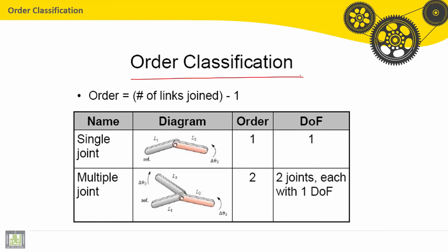Order classification. This is the number of links joined minus 1. For a single join, we have here the join between 2 links. The first one, link 1, it is the reference, the ground. The second one makes delta theta as a degree of freedom. So the order is 1, and the number of degree of freedom is 1.